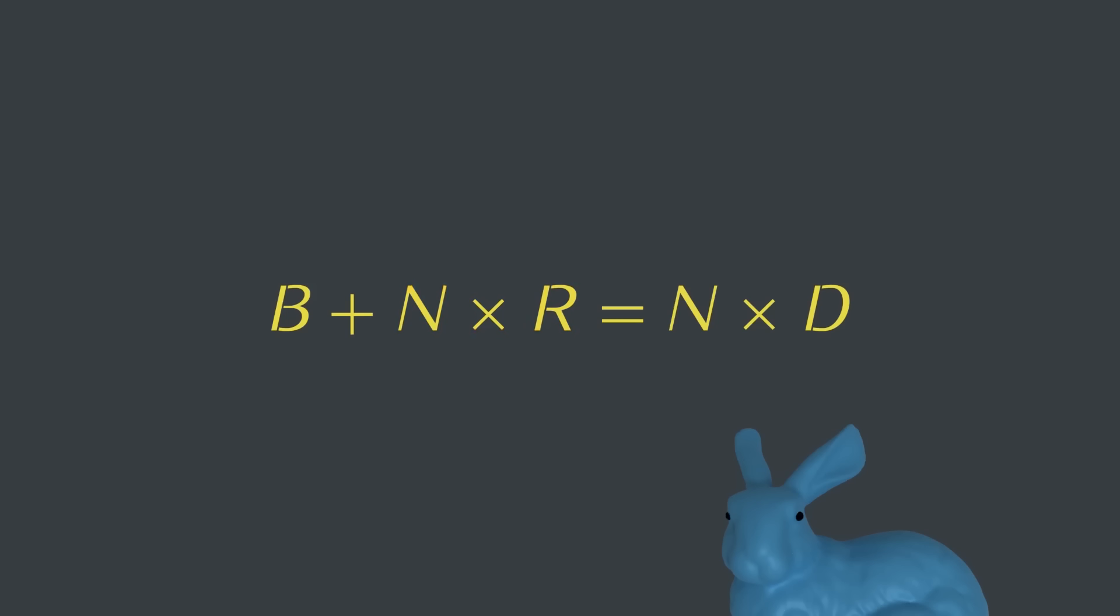The significant thing about this equation is that n is on both sides. Before, just the death rate went up as the number of creatures grew, but now the birth rate also grows as n gets bigger. To see this in action, let's solve for n and look at a simulation.